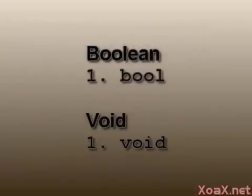Fortunately, the other data types have only one variant and name: bool and void. We have discussed the bool type already.